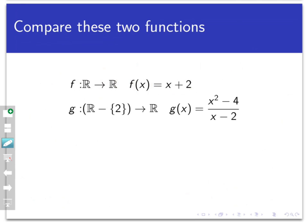I'm going to set up a table for this function to record some outputs. Let's put in zero, one, two, three, four, for example. This is really simple: f of zero is two, f of one is three, four, five, and six. Okay, very simple linear function.